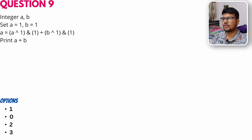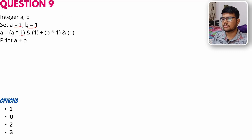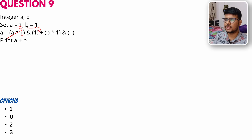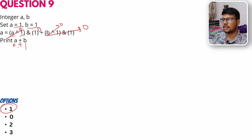Question 9: a = 1, b = 1. Then a = a XOR 1 = 1 XOR 1 = 0, and 0 AND 1 = 0, so a = 0. b = b XOR 1 = 0, then the whole term becomes 0. So a + b = 0 + 1 = 1. The correct answer is 1.